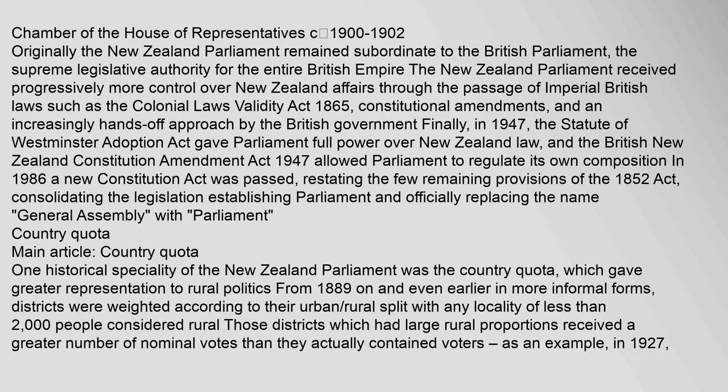Originally the New Zealand Parliament remained subordinate to the British Parliament, the supreme legislative authority for the entire British Empire. The New Zealand Parliament received progressively more control over New Zealand affairs through the passage of imperial British laws such as the Colonial Laws Validity Act 1865, constitutional amendments, and an increasingly hands-off approach by the British government. Finally, in 1947, the Statute of Westminster Adoption Act gave Parliament full power over New Zealand law, and the British New Zealand Constitution Amendment Act 1947 allowed Parliament to regulate its own composition. In 1986 a new constitution act was passed, restating the few remaining provisions of the 1852 Act, consolidating the legislation establishing Parliament and officially replacing the name General Assembly with Parliament.